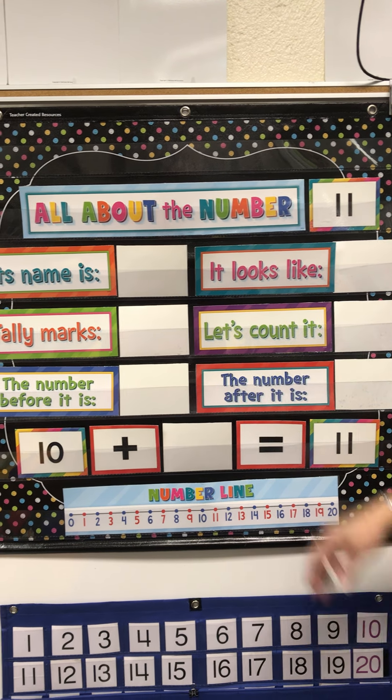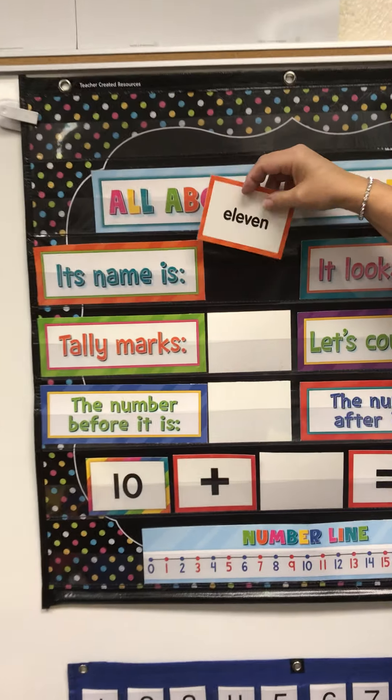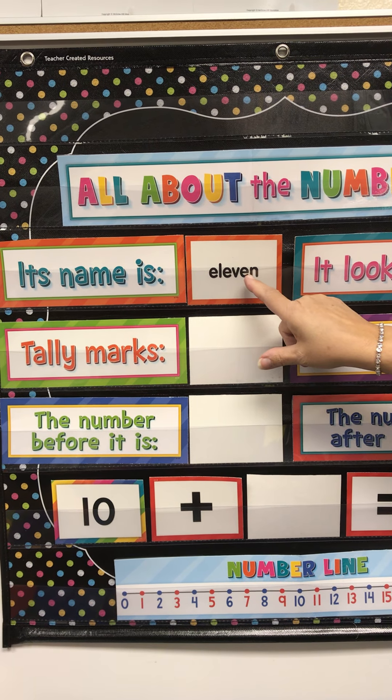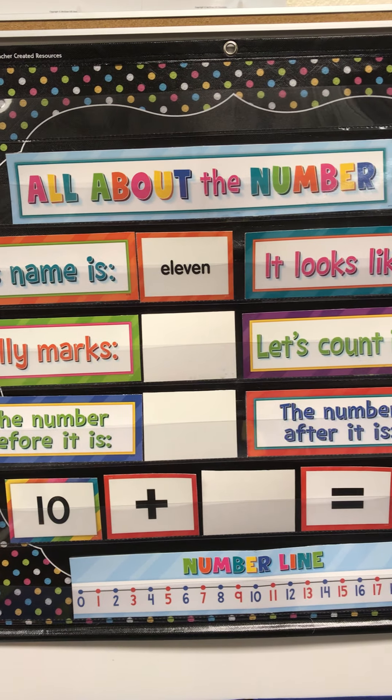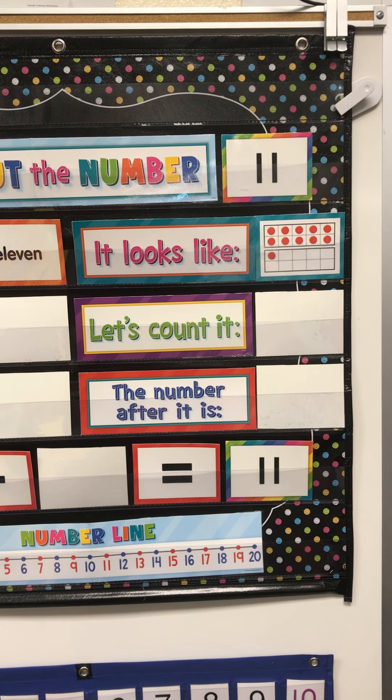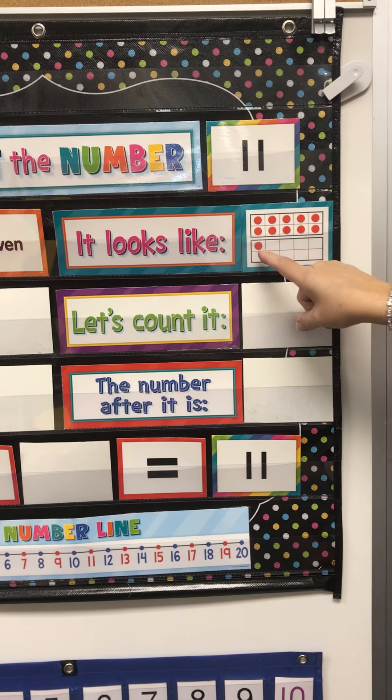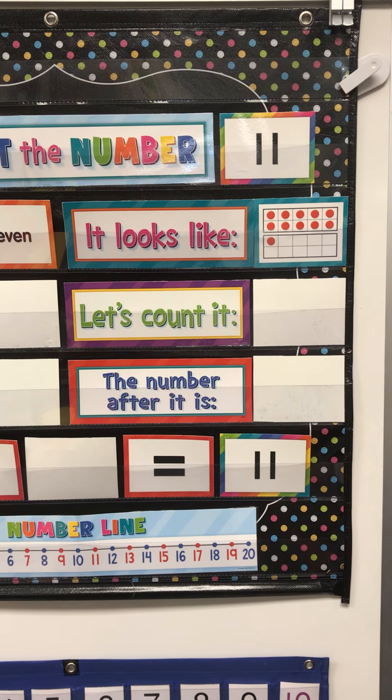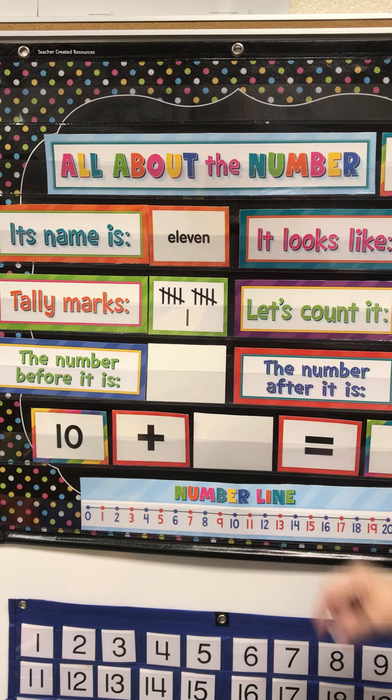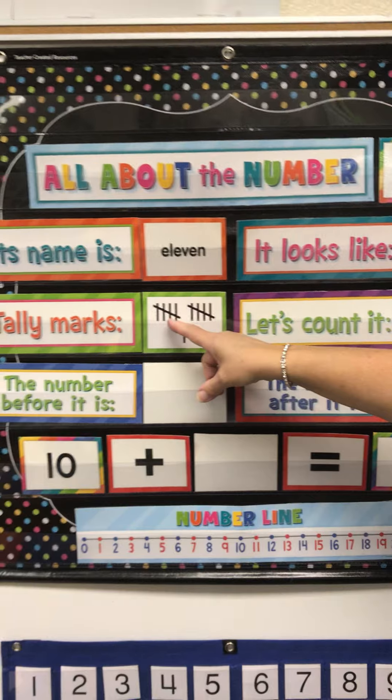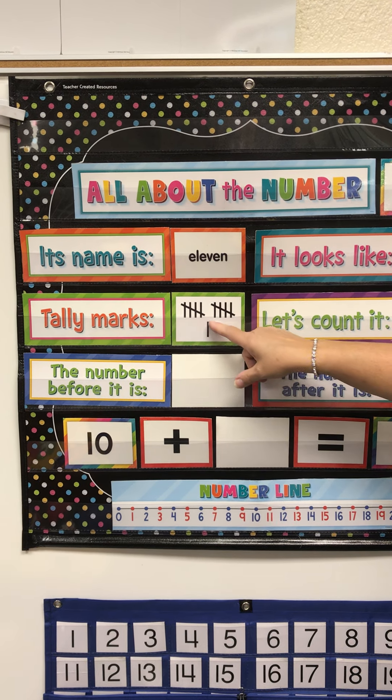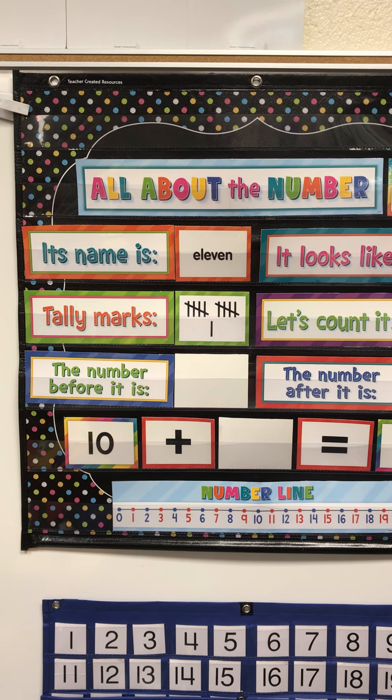All right, so its name is 11, E-L-E-V-E-N. What does 11 look like in a 10-frame? Well, it's one full 10-frame because that's 10, and one more makes 11. When we have 11 tally marks, we have a group of 5 and another group of 5—5, 10—and one more makes 11.